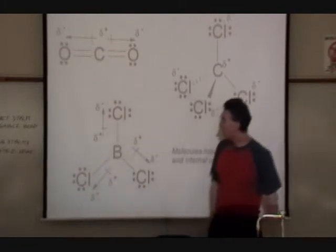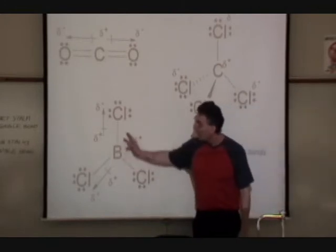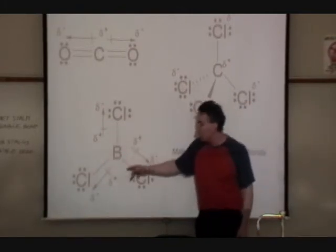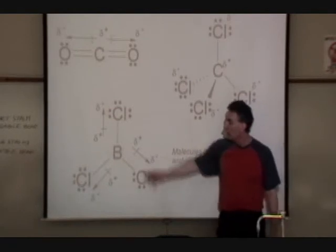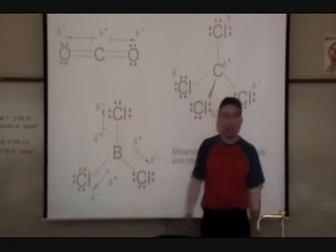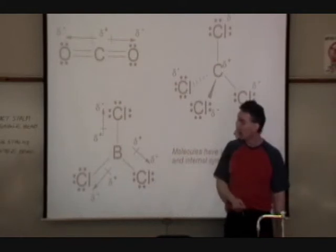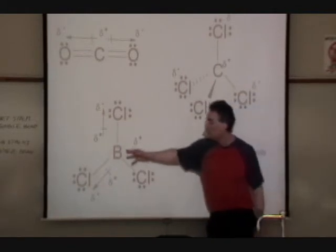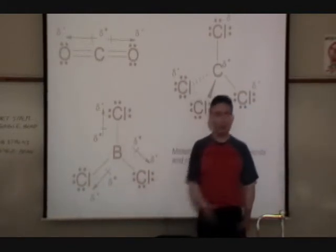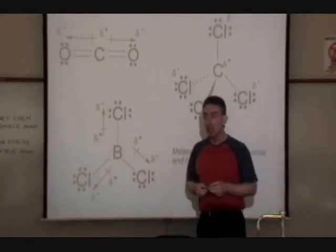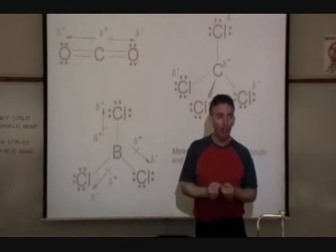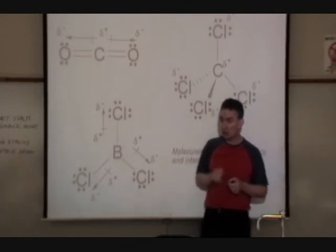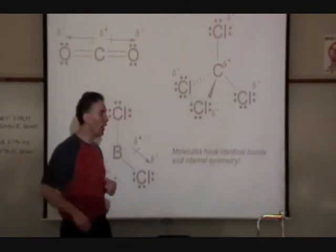The last example is trichloroborane. Again, there's high symmetry in the molecule — 120-degree bond angles between each pair of bonding electrons. Each of these dipole bonds is equal in strength because they're using the same kinds of atoms. So these three equal dipole bonds pulling in equal and opposite directions — like the three points of a triangle — is a tug of war that cancels out. There is no momentum to these dipole bonds; they pull in equal and opposite directions. So again, no dipole moment even though we have dipole bonds.